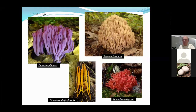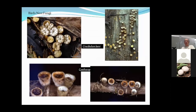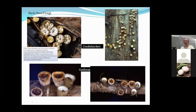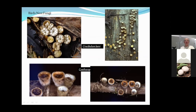Another group of Basidiomycetes are the coral fungi, which look like coral and come in all colors — drab browns to bright reds, orange, purples, and blues. Another interesting group is the bird's nest fungi, which look like tiny bird's nests full of eggs. Each little egg, called a peridiole, is like a tiny puffball. Rain lands in these splash cups and disperses the peridioles. They're saprophytes growing on dead material like straw and sticks, and they're very small — about a quarter inch across.